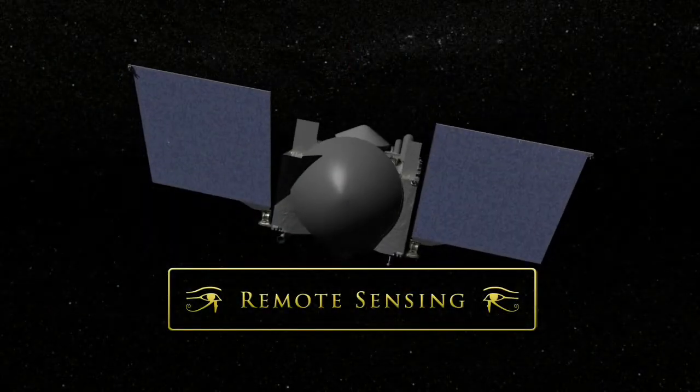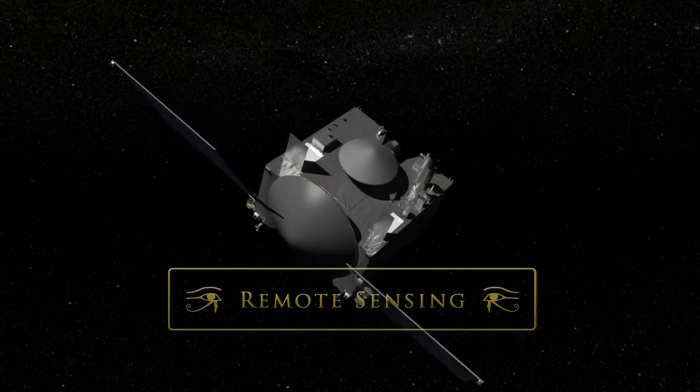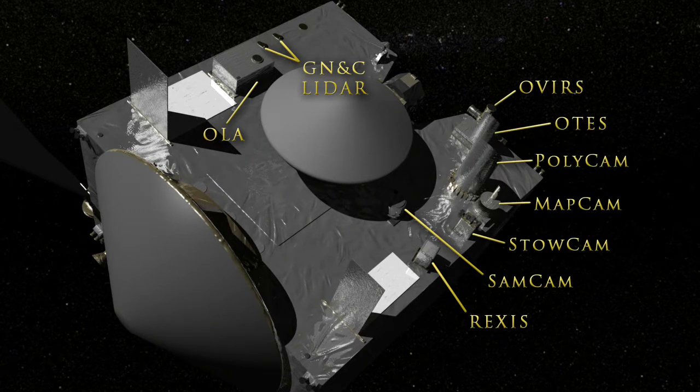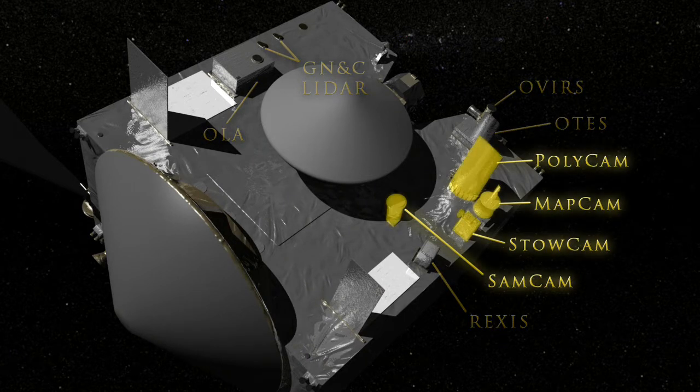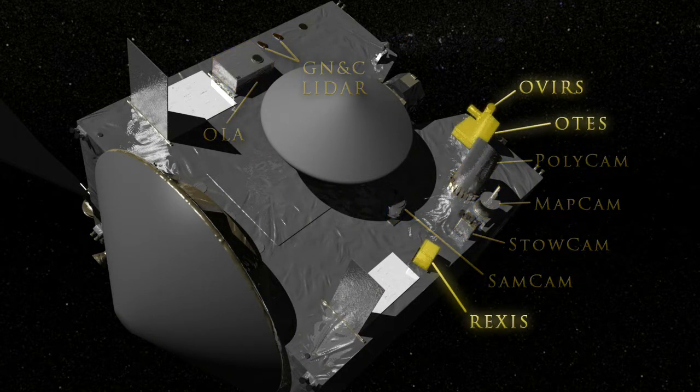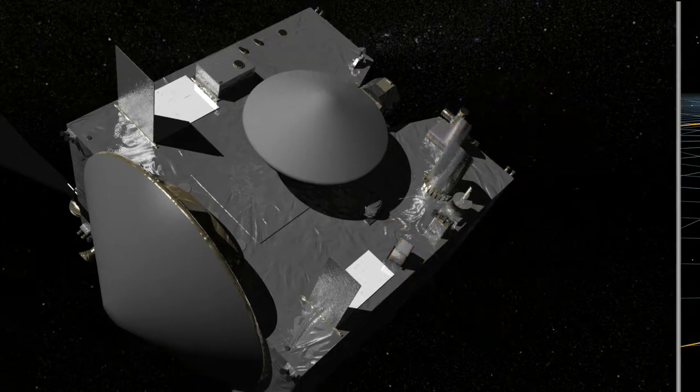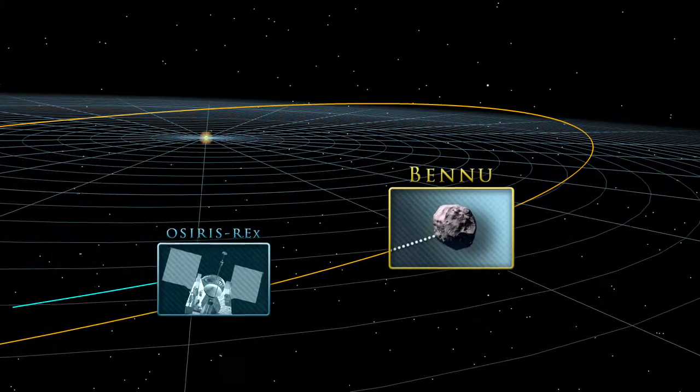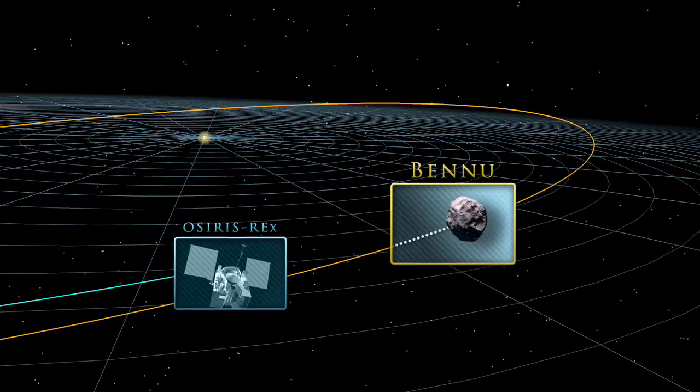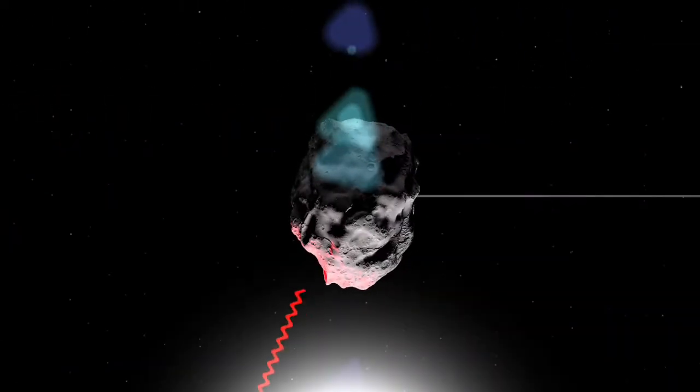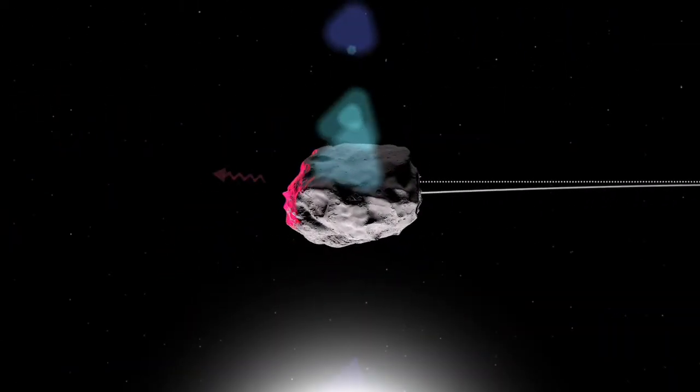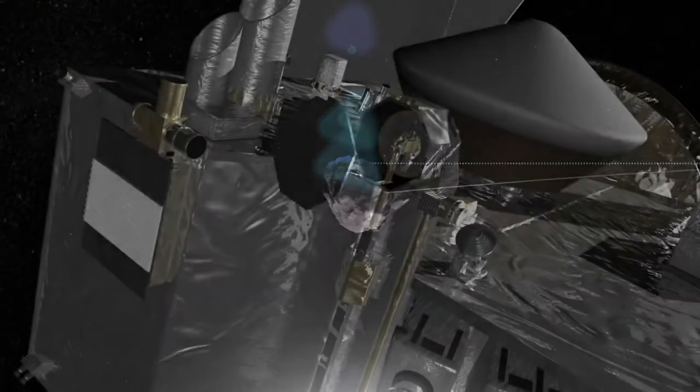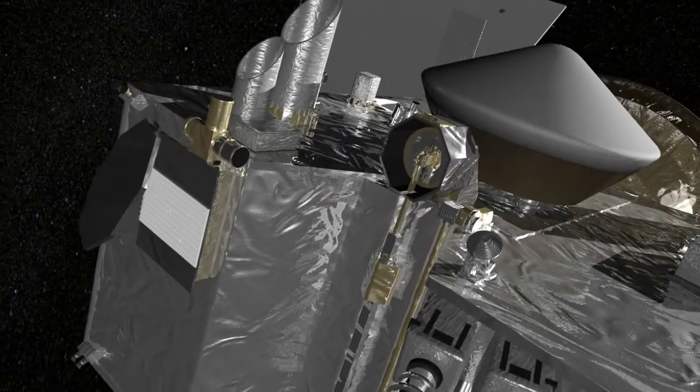The OSIRIS-REx payload contains several instruments for remote-sensing observations, including high-resolution cameras, LIDAR, and X-ray visible light and infrared spectrometers. Knowing the physical properties of Bennu will help scientists refine its orbit over time, including deviations caused by heating and cooling from sunlight, and it will allow them to pick a site for OSIRIS-REx's primary mission.